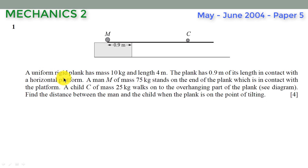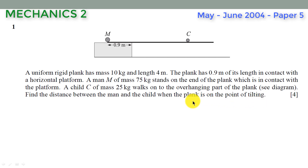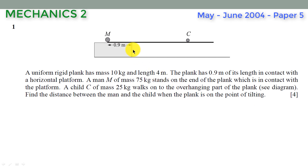There is one important piece of information: the plank is on the point of tilting. When we are told this, we know the plank is in equilibrium and we can use the principle of moments. The statement also provides a second key fact — if the plank is at the point of tilting, it will tilt or turn about a specific point.